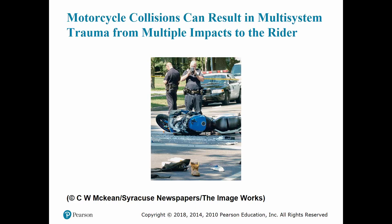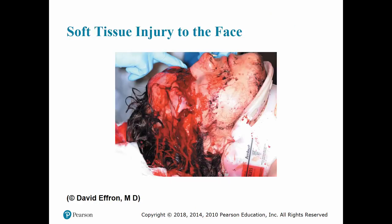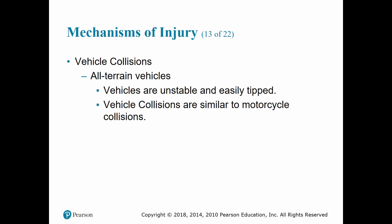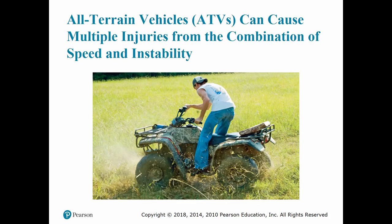The incidence of morbidity and mortality is greatly affected by whether the rider is wearing a helmet. Boots, leather clothing, and a helmet can help protect against soft tissue damage such as road rash and against head and facial injuries. ATVs — whether four-wheelers, dirt bikes, or quads — are common in this area. These vehicles are very unstable and can tip easily, causing potential multiple injuries due to the combination of high speed and instability.